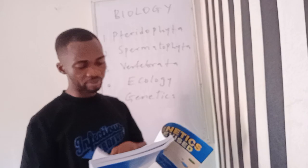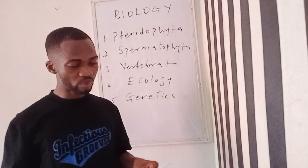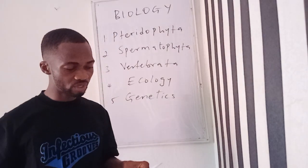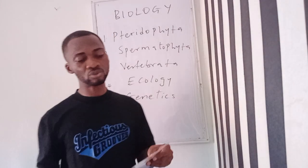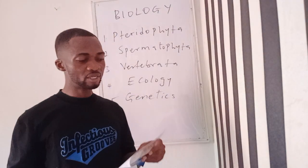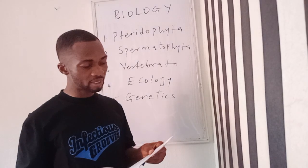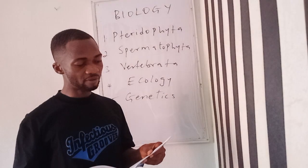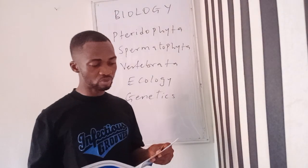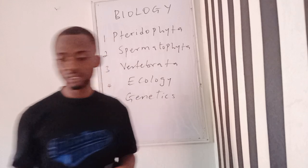Chapter fourteen covers human genetics: pedigree analysis, amniocentesis, twins, human traits, disorders due to mutant genes, sex chromosome abnormalities, female sex chromosome abnormalities, and male chromosome abnormalities.